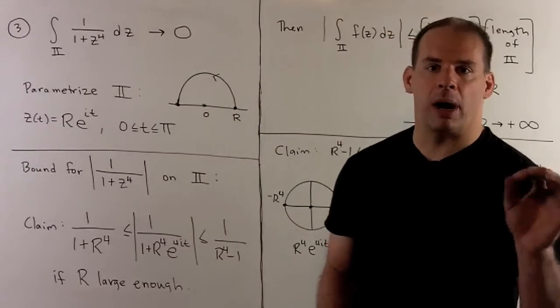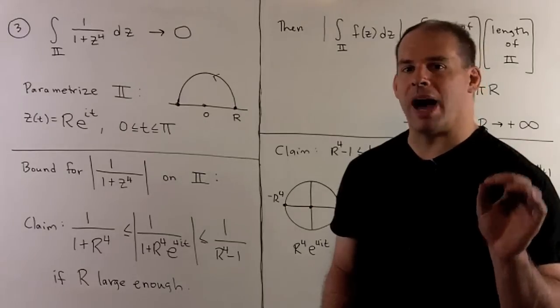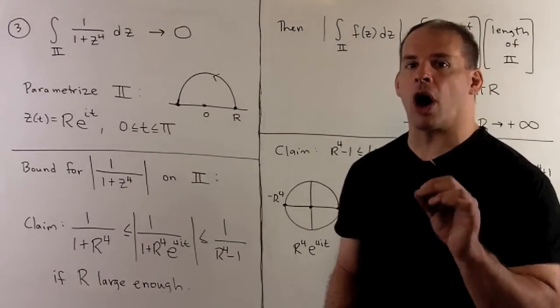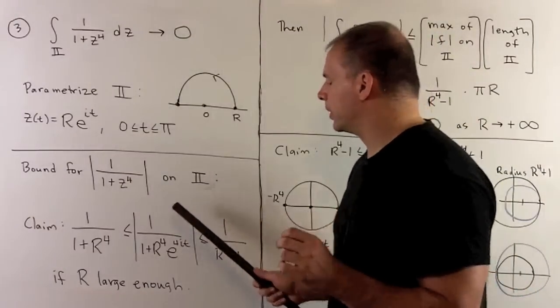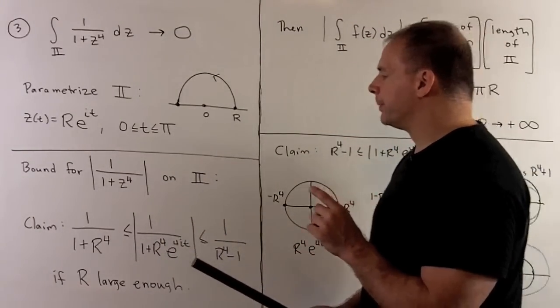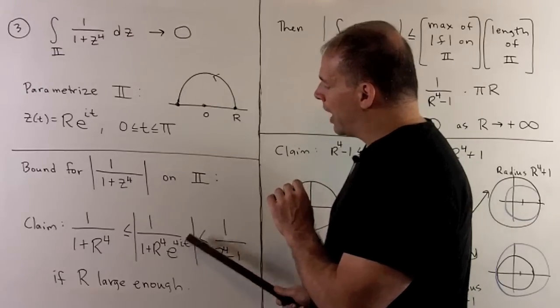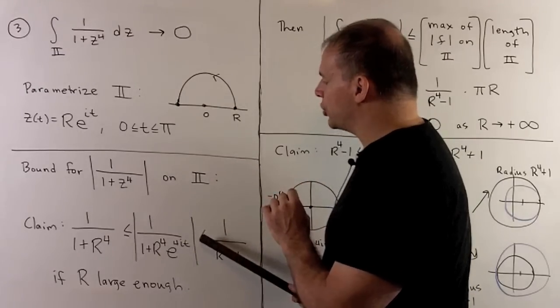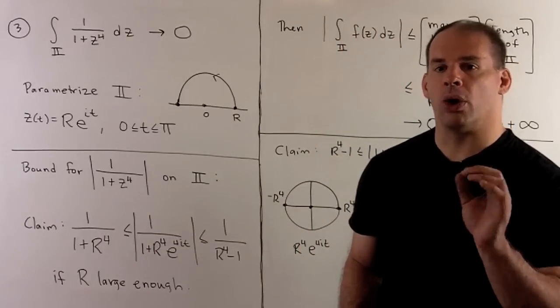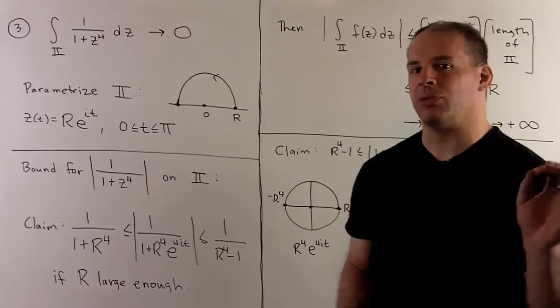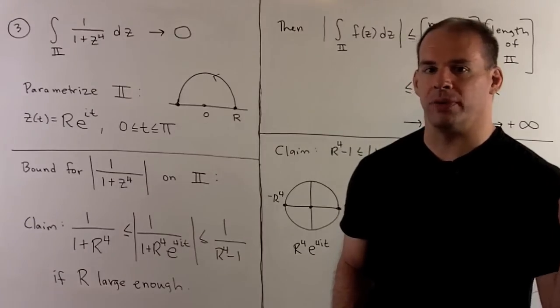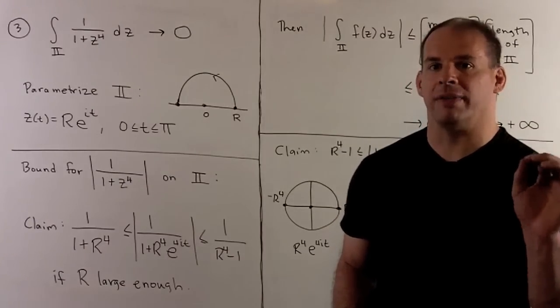Now, with the parametrization, we're going to try to find a bound for the modulus of our function. So, where we have a z, we're going to put in r e to the i t. That's going to give us this term here. Then, our claim is going to be that we'll have modulus of our function on the curve between 1 over 1 plus r to the 4th and 1 over r to the 4th minus 1 if we let r be large enough. Since we're going to take the limit as r goes off to infinity, we'll hit large enough eventually.